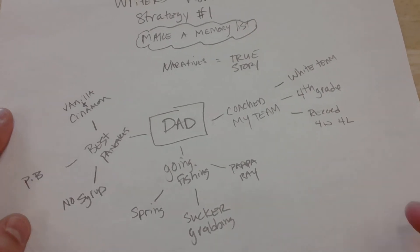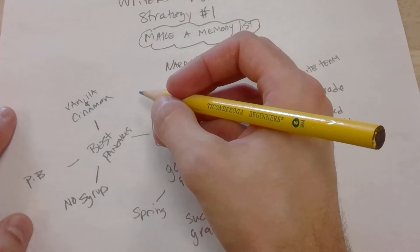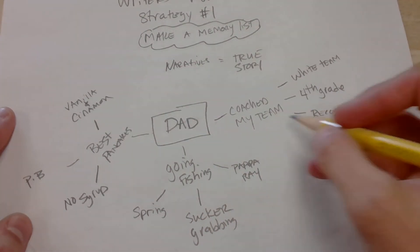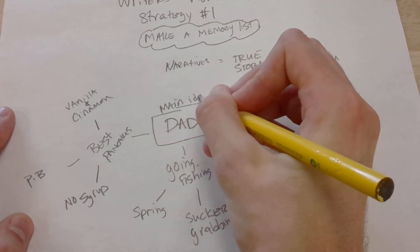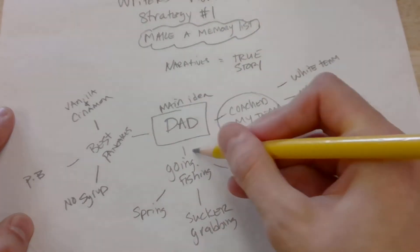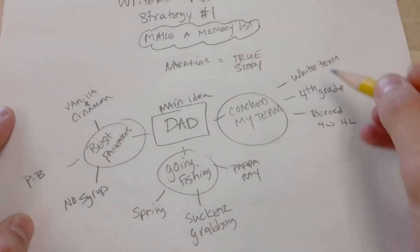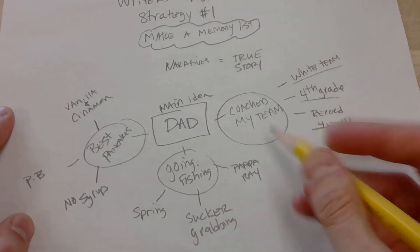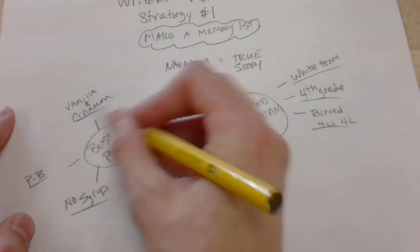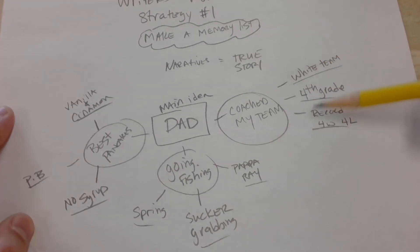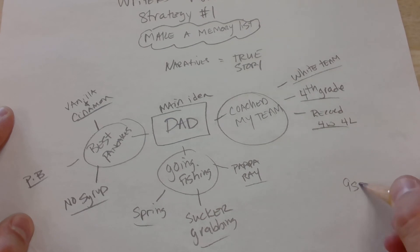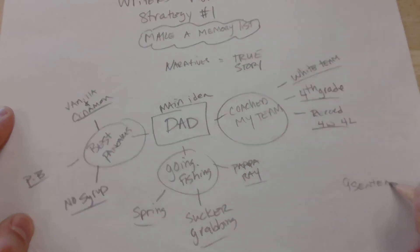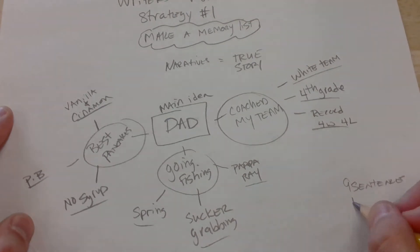So these are the things I would use. If you think about it, my dad is my main idea, these are my memories, and then these are the supporting details — these are going to be the sentences I fill in. If you look, I could easily make three three-sentence paragraphs. That's an easy nine sentences, and I think I can tell a pretty good story with a good beginning, a great middle, and a fantastic end.